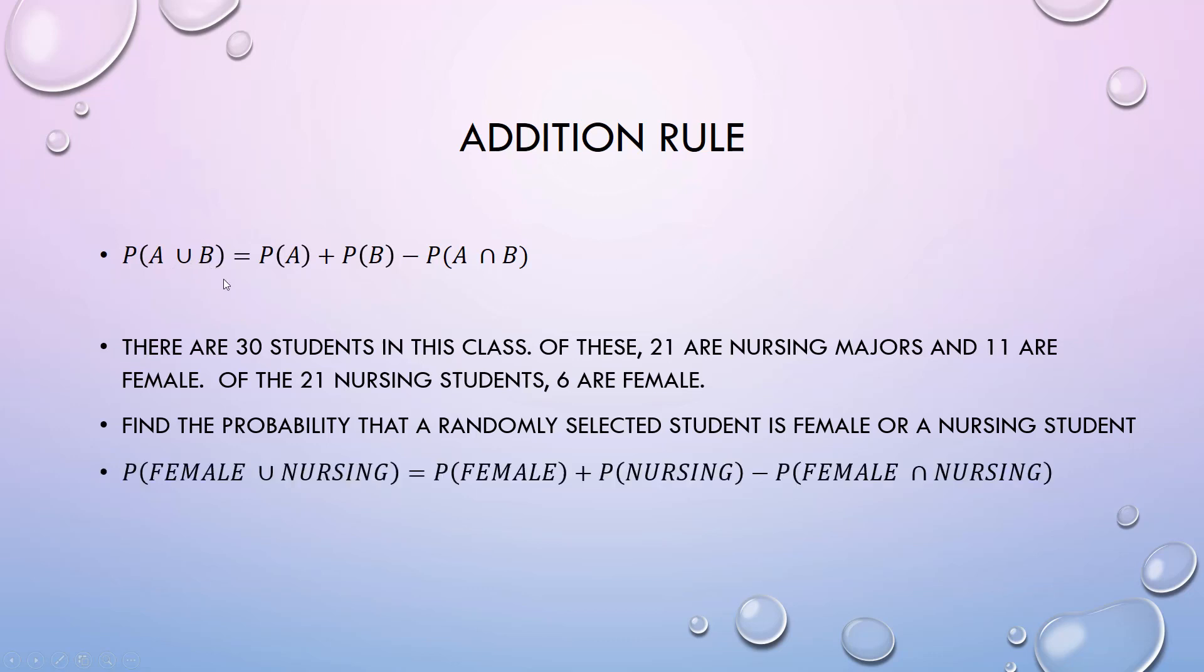If we want to find the probability that we have a female or a nursing student, we have to be careful because we can find the probability they're female and we can find the probability they're nursing, but we've counted this intersection twice and so we end up having to subtract that out.